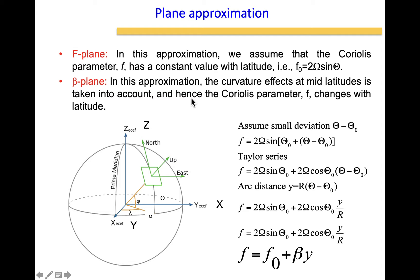The F-plane approximation means that a parcel moving from equator to pole is assigned the same constant value of F₀, independent of latitudinal variation. So if I take a parcel from a given location, I assign it a fixed constant value of the Coriolis parameter and it does not change. This means a parcel starting near the equator will always have a zero value of the Coriolis parameter under the F-plane assumption.